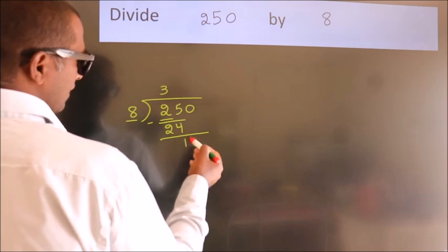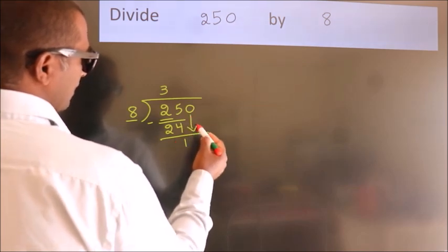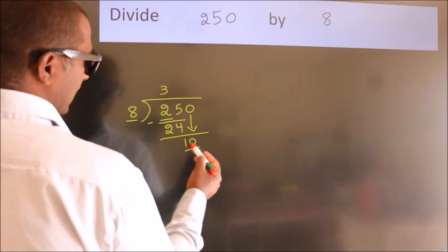After this, bring down the beside number. So 0 down. So 10.